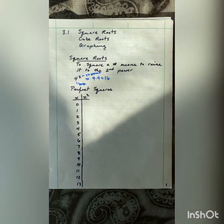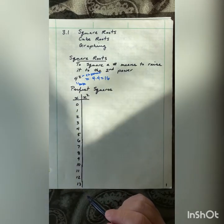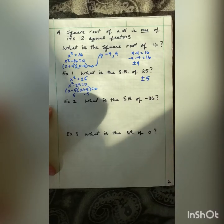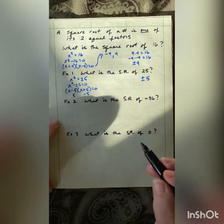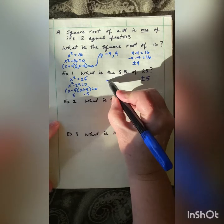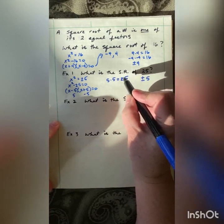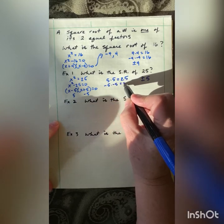I highly recommend that you know them up to 13. That way if you see these, you'll know either one of them. I squared positive 5 to get 25, or I can square negative 5 to get 25.